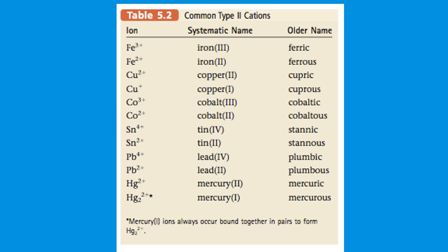Here are some examples of common Type 2 cations. Notice we have the same elements — iron and iron, copper and copper, cobalt and cobalt — but with different charges. There is a link between the systematic name and the ion: if the charge on iron is plus 3, the Roman numeral following the systematic name is 3. Plus 2 has Roman numeral 2. The Roman numeral indicates the charge on the ion. So copper(I) means the charge on copper is plus 1; tin(II) means the charge on tin is plus 2.